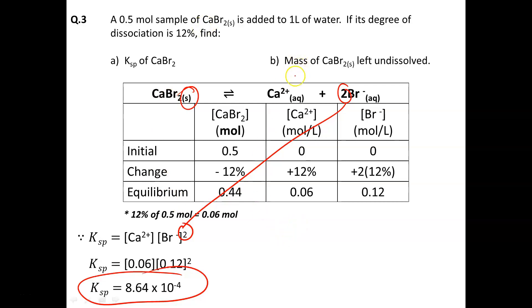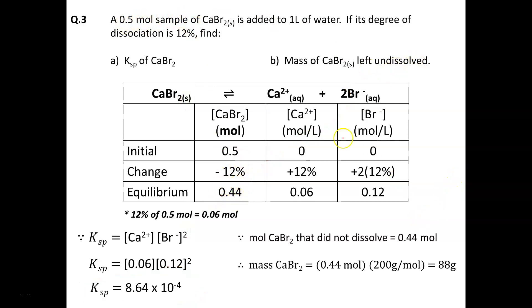Part B asks what mass of calcium bromide is left undissolved. We know we had 0.5 moles originally, and in the end, we only have 0.44 left. So 0.44 moles did not dissolve. Mass of calcium bromide is moles times the molar mass, which we get from the periodic table. And there you have it, 88 grams of calcium bromide remain undissolved.